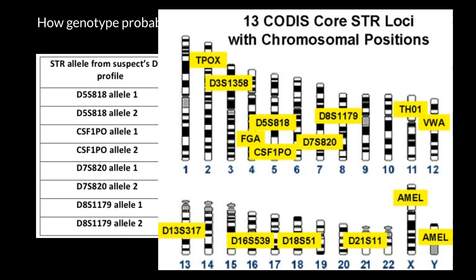One chromosome may have a different number of STRs, and the molecules would be of a different size. We count repeats at each molecule. For example, on one chromosome we may get 20 repeats, and on the other homologous chromosome we may have 7 repeats. So we would have the number for this locus, for this person: 20 and 7.